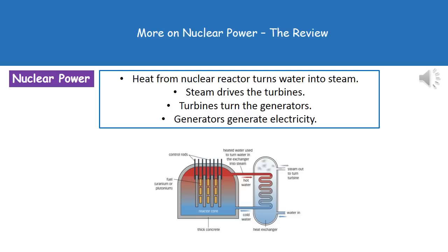Basically, inside the nuclear reactor we have a way of generating a large amount of heat. That heat turns cold water into steam, which goes off to turn a turbine. The turbines turn the generators and the generators generate the electricity. No matter what power station we're talking about, it's good to bear in mind that the last three steps are always the same. The only difference is how we actually generate the heat to change water into steam.